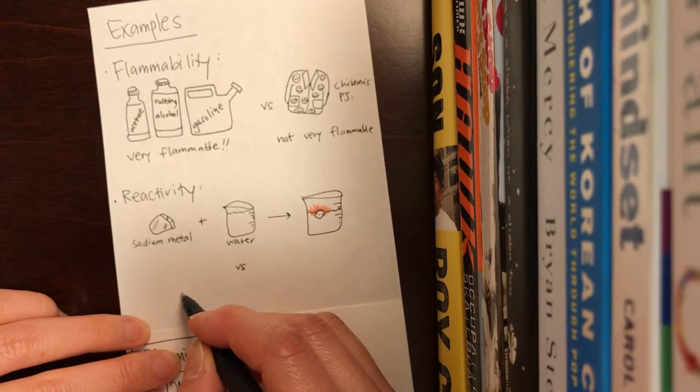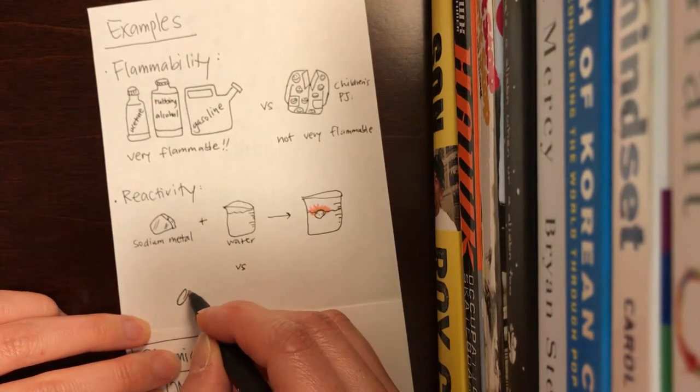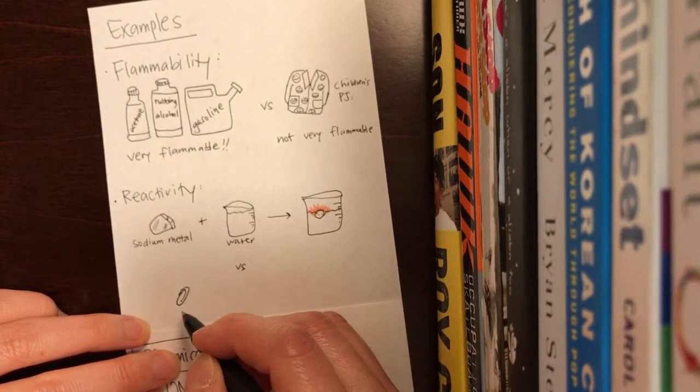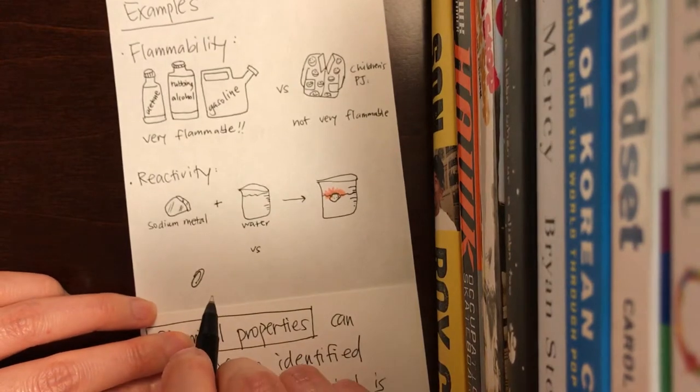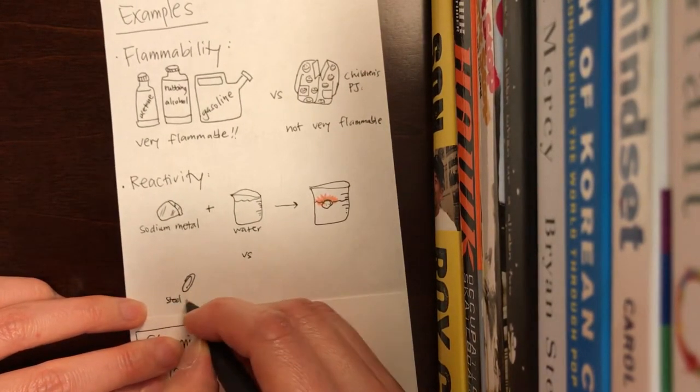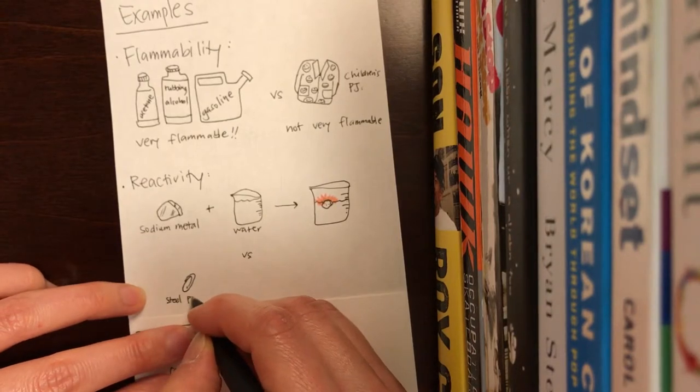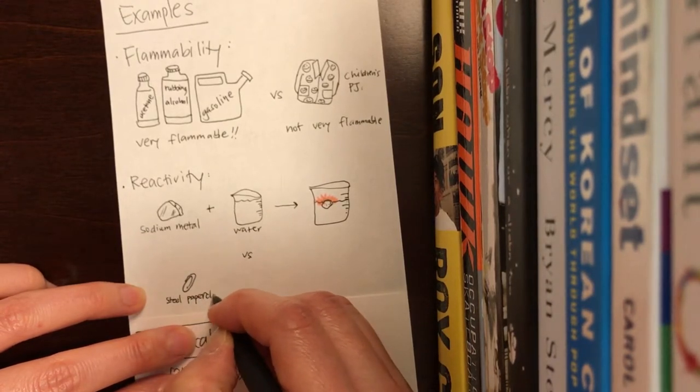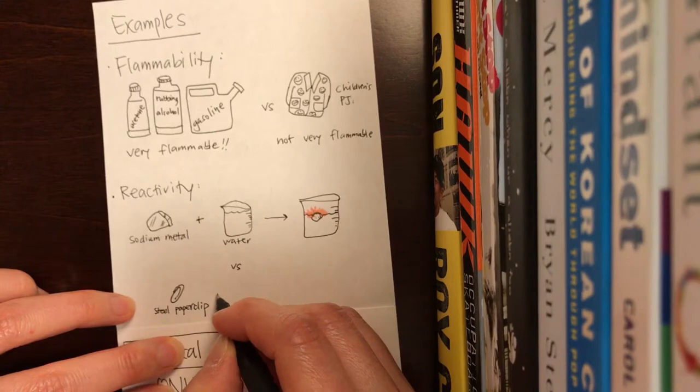Versus, if you put, like, a paperclip, which is made of metal, but it's made of typically steel. It's usually coated, the paperclip. You put that in water,